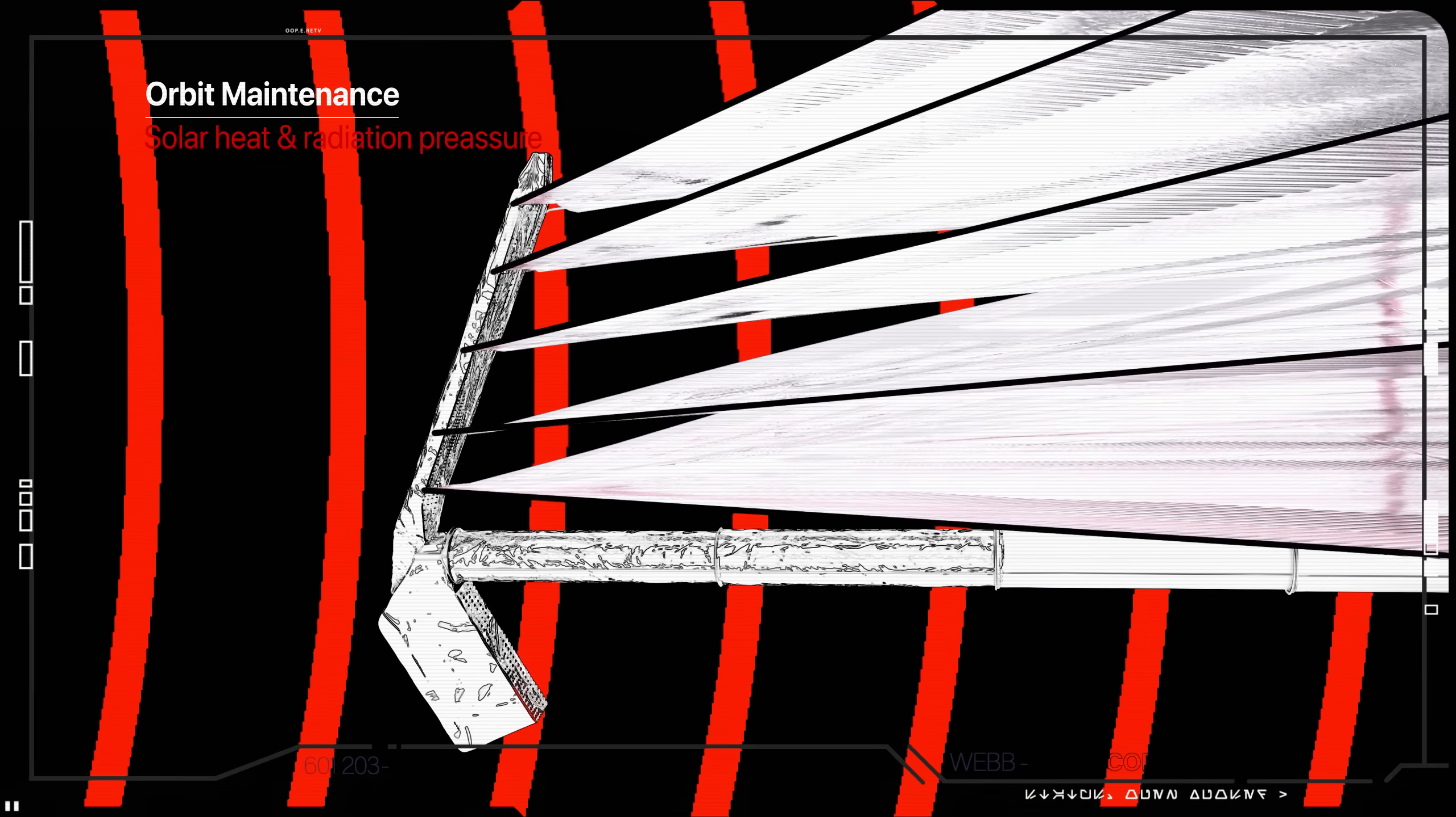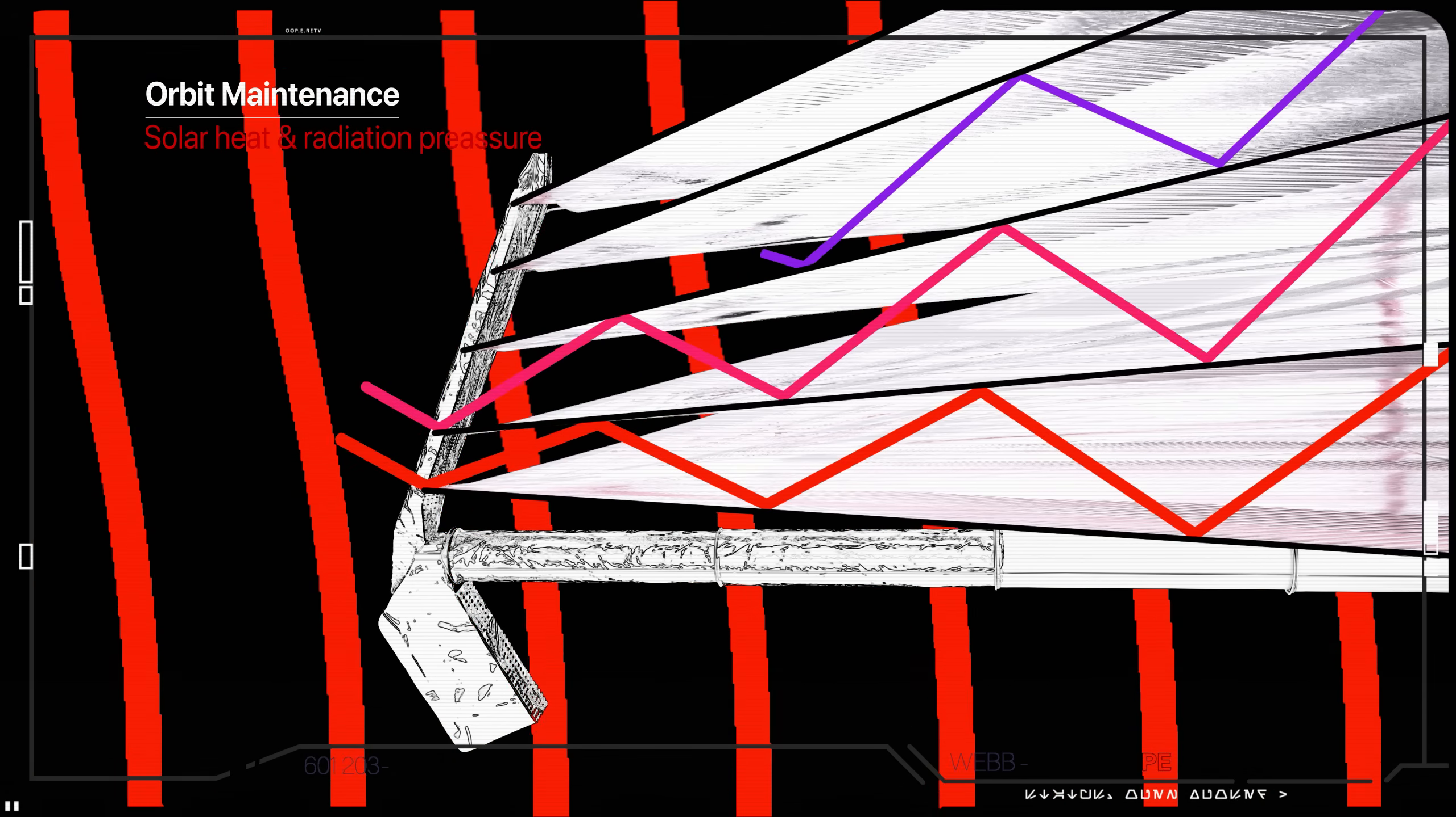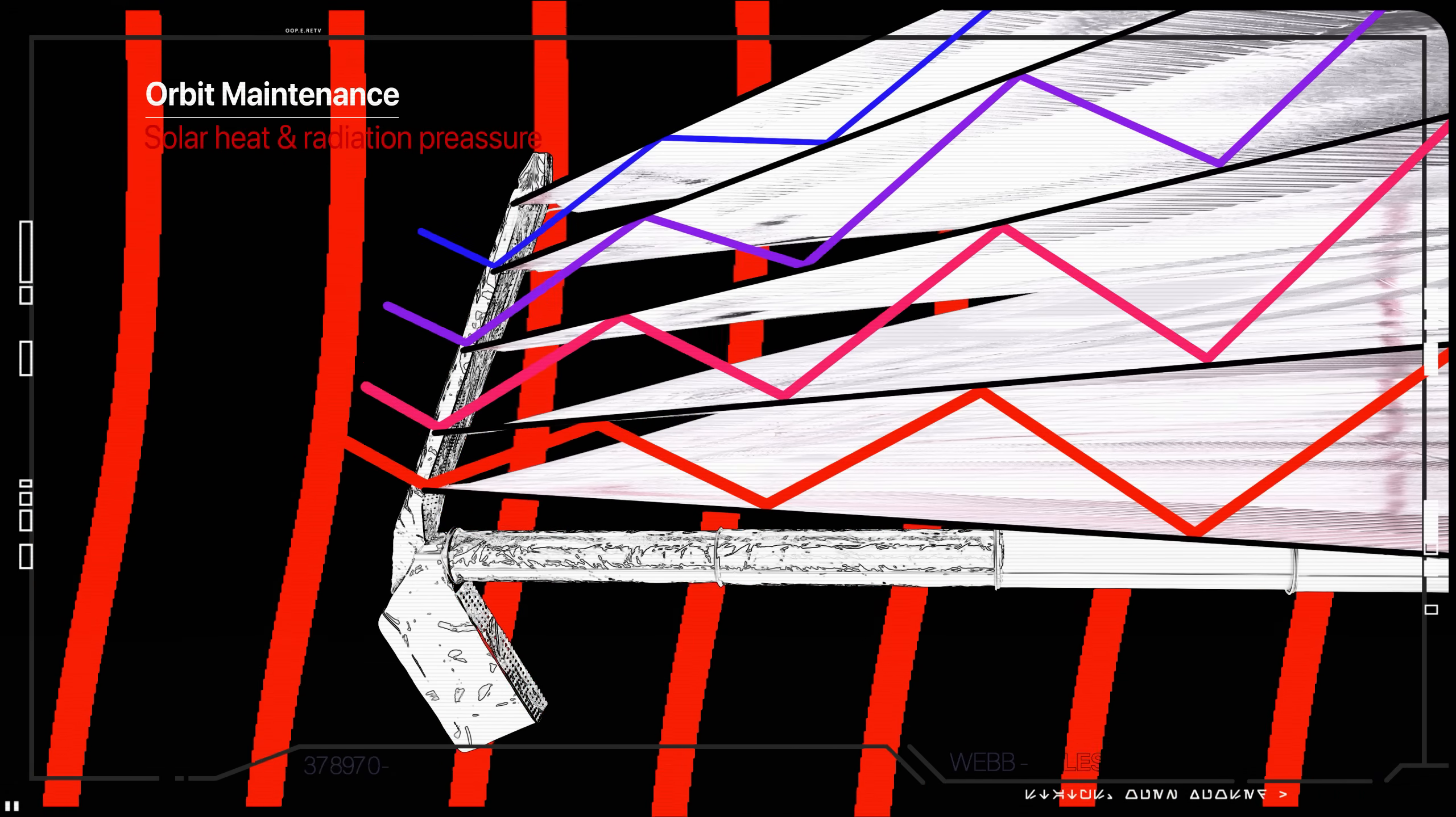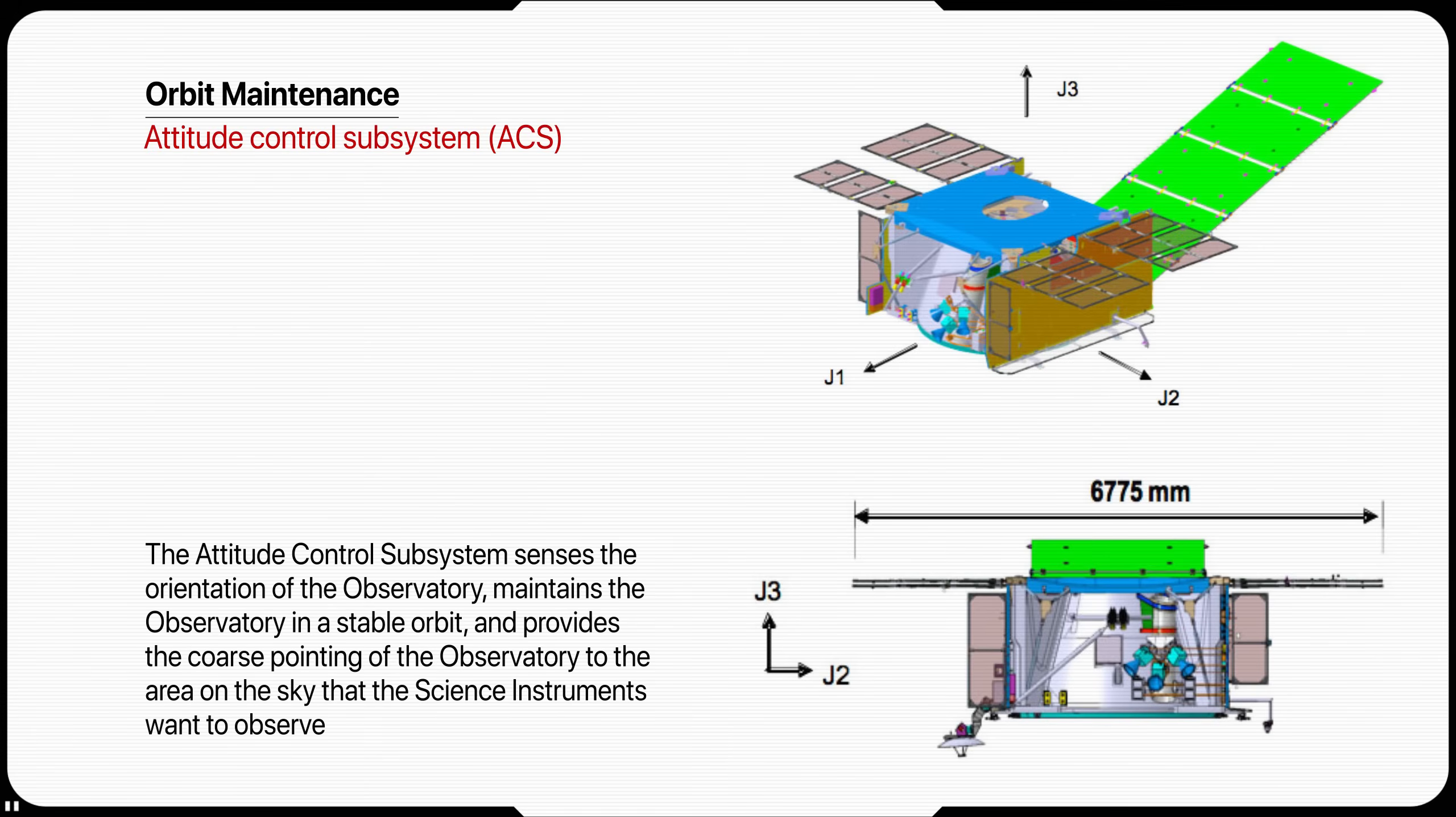During science observations, the observatory will be pointed at a target in an orientation at which the sunshield center of pressure is not aligned with the observatory center of mass. As solar photons hit the large sunshield, they place a torque on the observatory as a whole.